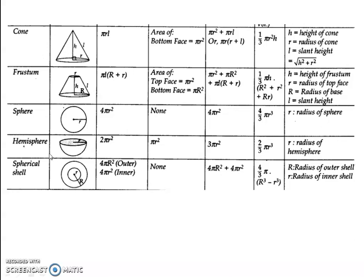Next, sphere and hemisphere. For a sphere, curved surface area is 4πR² and total surface area is also 4πR², because a sphere does not have any flat surface — so curved and total surface area are the same. Volume is (4/3)πR³. Hemisphere is half of the sphere: curved surface area is 2πR². But hemisphere has a plane surface, so total surface area is 3πR² (that is 2πR² + πR²).